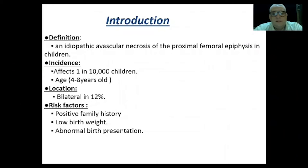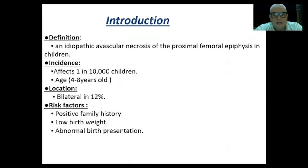This disease is defined as idiopathic avascular necrosis of the proximal femoral epiphysis in children. It affects 1 out of 10,000 children, and the common age is between 4 and 8. It occurs bilaterally in a small percentage — 12%. Family history is significant because sometimes patients give a positive family history among siblings.